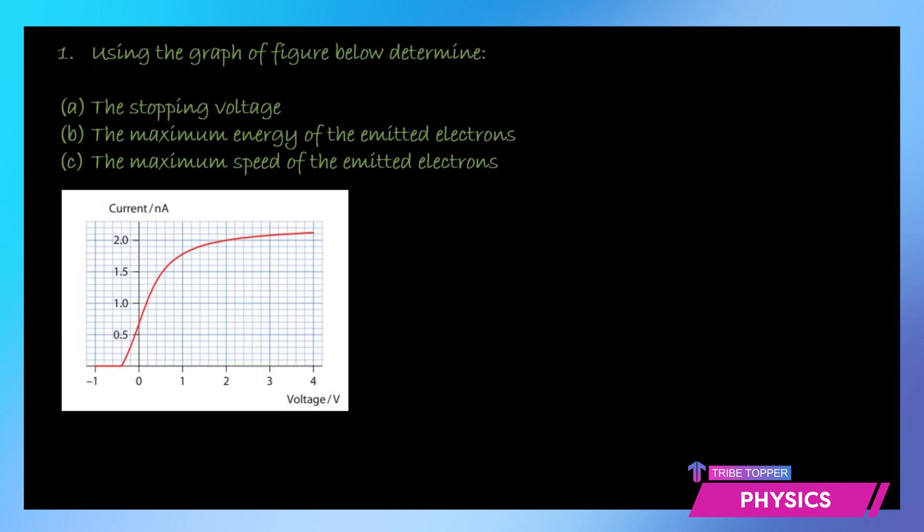Here I have a question for you to understand how you can determine if there is a graph given. This is the graph with current on the y-axis and voltage on the x-axis. What is the stopping voltage? If you look at the graph, every square is denoting 0.2. When does your current drop to zero? Exactly at negative 0.4. So we would say 0.4 volts is the stopping voltage in this case, because stopping voltage refers to when the photoelectric current drops to zero. It stops every electron reaching the collecting plate.